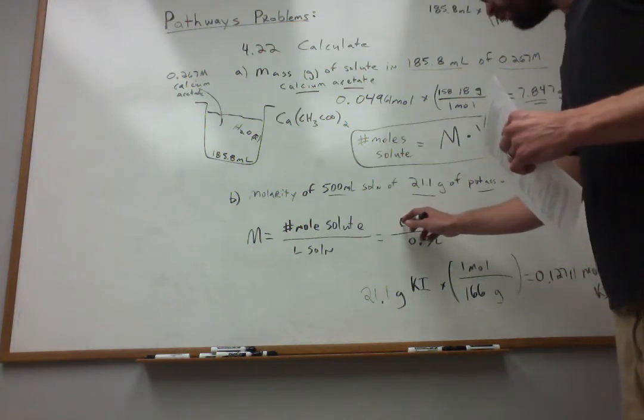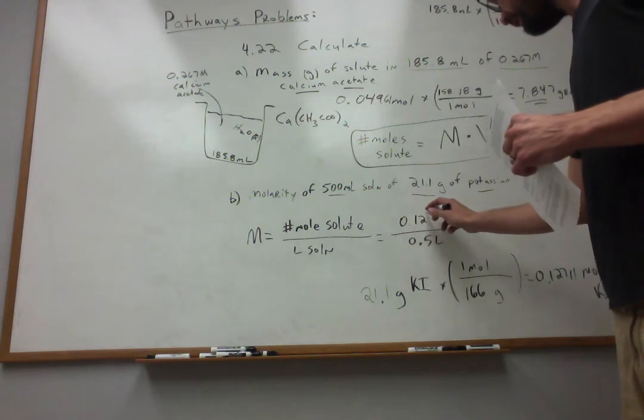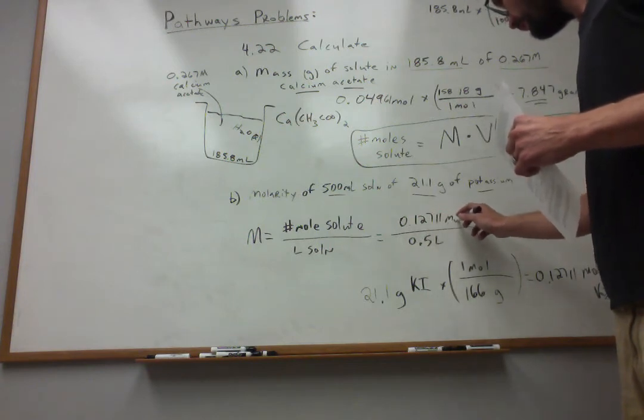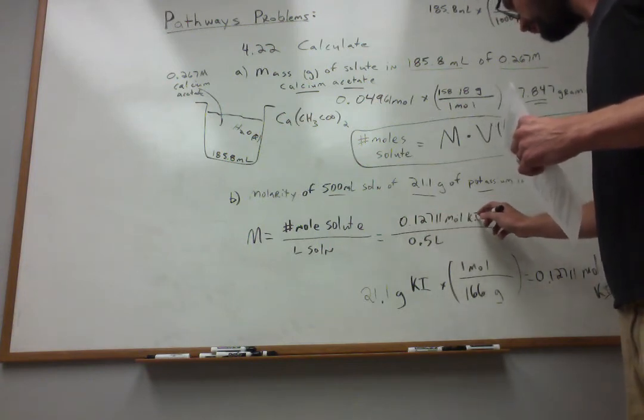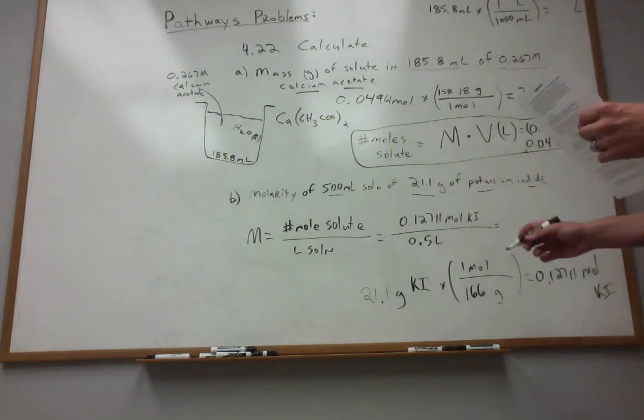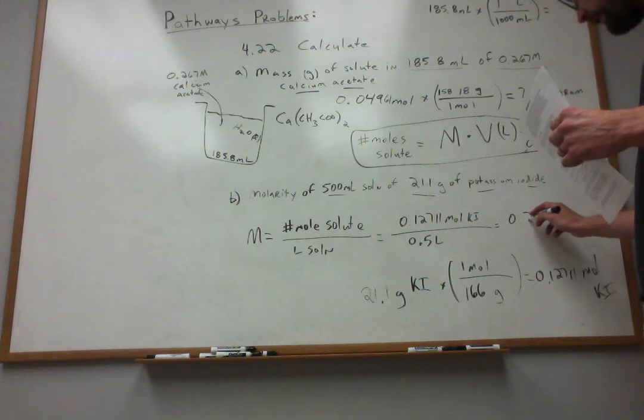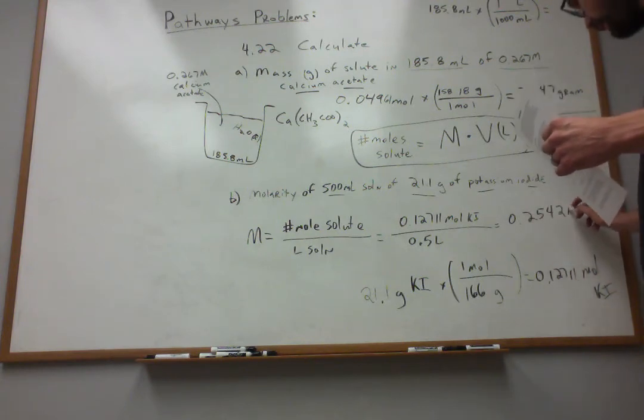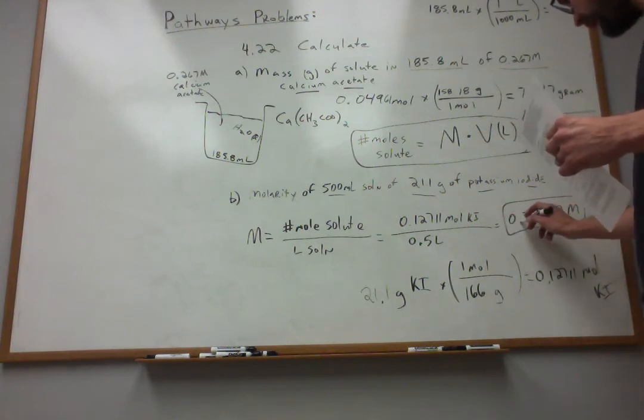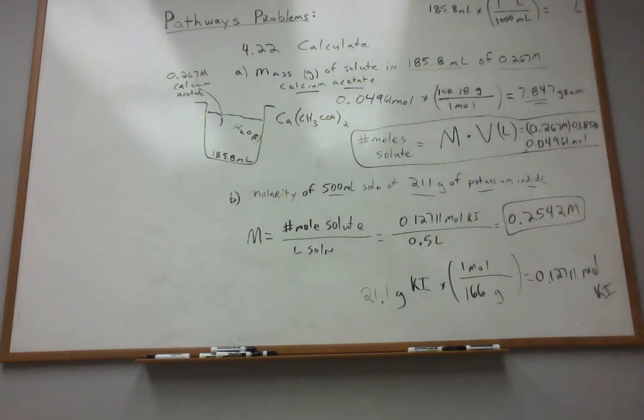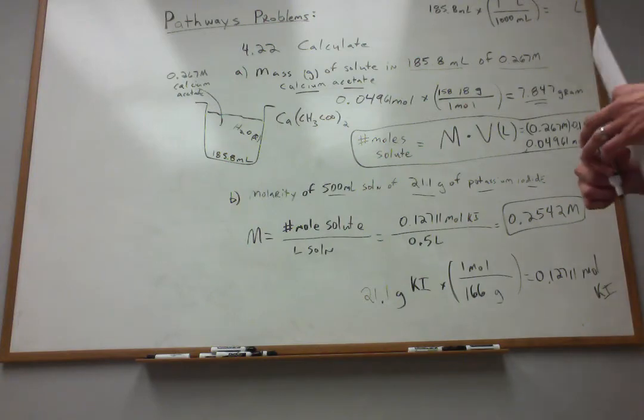That moles of solute goes right here. And then we're rocking and rolling and we do the division. We find the molarity of this solution is 0.2542 moles per liter. Our chemist might say that's 0.2542 molar. So that's part B.